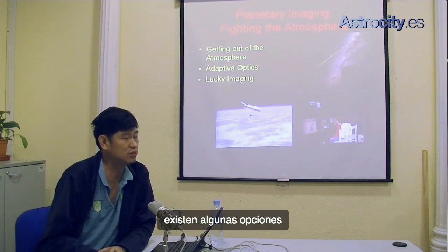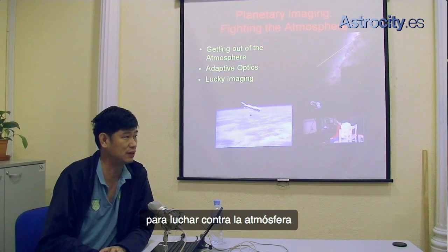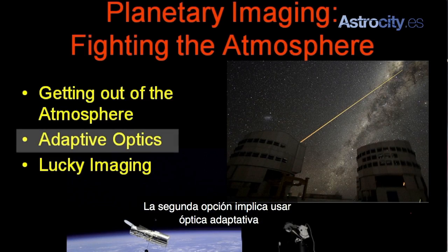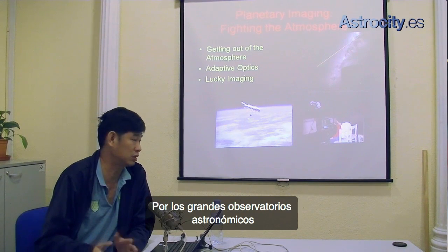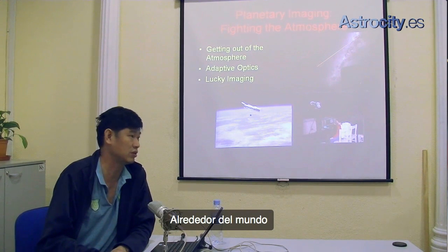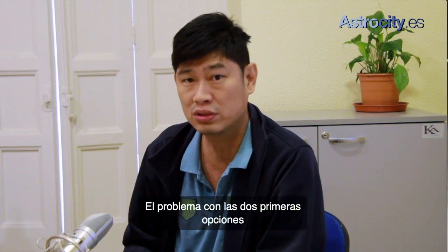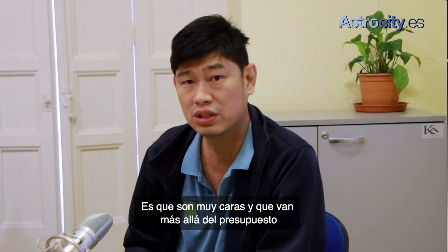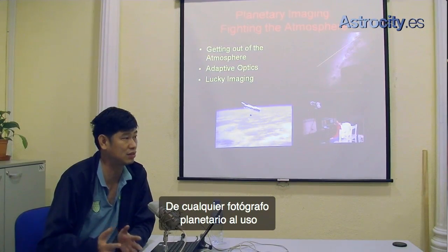There are a couple of ways to fight the atmosphere. The first is getting out of the atmosphere, which is basically like sending a space telescope. The second way is using adaptive optics, which is basically used by major astronomical observatories around the world. The problem with the first two choices is that these are very expensive and way beyond the budget of ordinary planetary imagers.